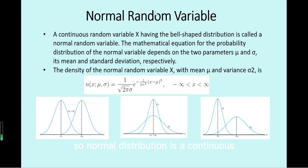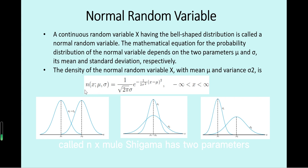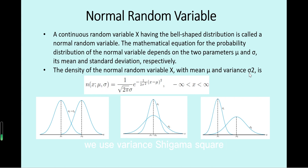Normal distribution is a continuous distribution and its random variable has a bell-shaped figure. These are examples of normal distribution density curves. Its density function, N(x; mu, sigma), has two parameters: the mean mu and the standard deviation sigma. We also use variance sigma squared.